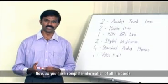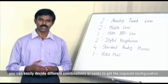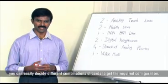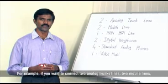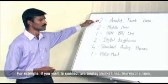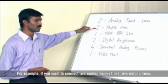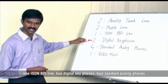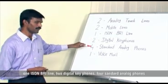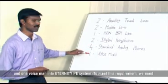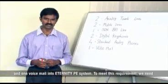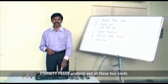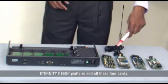Now, as you have complete information of all the cards, you can easily decide the different combination of cards to get the required configuration. For example, if you want to connect two analog trunk lines, two mobile lines, one ISD and BRI line, two digital key phones, four standard analog phones and one voicemail into Eternity PE system, to meet this requirement we need Eternity PE 6SP platform and all these four cards.